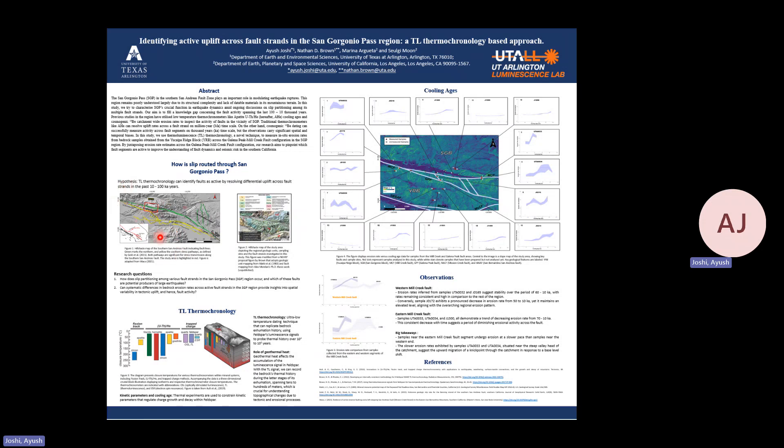We're trying to answer two main research questions through this poster. Firstly, how does slip partitioning happen among San Gorgonio Pass fault strands, and which of these fault strands have the potential to induce large earthquakes in future? And secondly, can differences in bedrock erosion rates across active fault strands provide insights into tectonic uplift and fault activity?